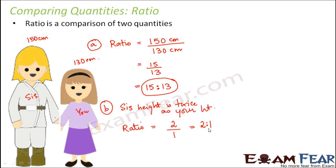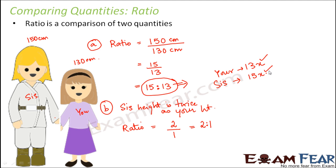What this actually means is that if your height is x, your sister's height is 2x. So if your height is 10, sister's height is 20; if your height is 50, sister's height is 100. Similarly, in the case of the 15:13 ratio, if your height is 13x, your sister's height would be 15x. Once you know the exact value of x, you can determine the exact heights of both yourself and your sister.